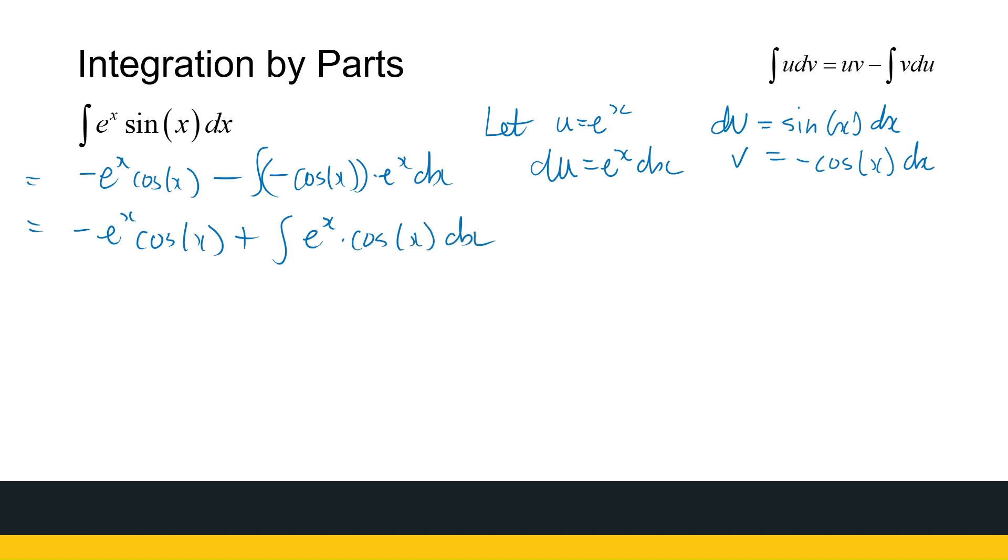Now, what I want you to notice is it didn't look like we simplified matters at all. We had e to the power x sine x in our original question. Now, I've got e to the power x cos x. So matters did not get simpler. But you'll see if we do integration by parts again, you'll see how the circular argument is going to help us.